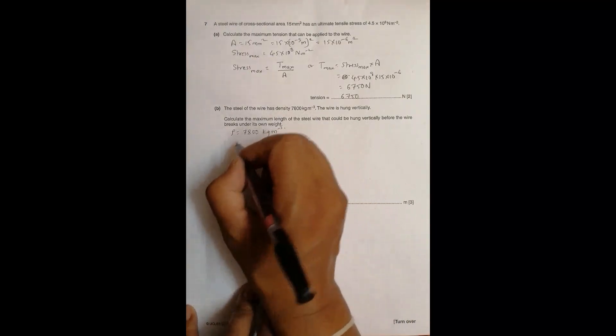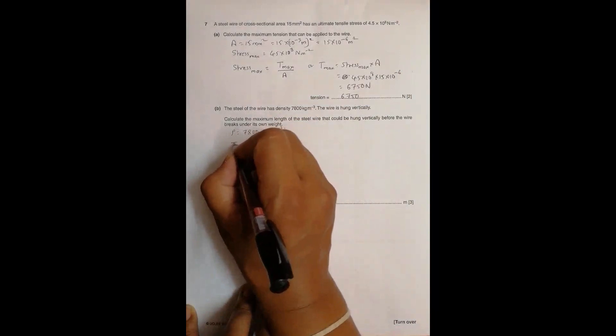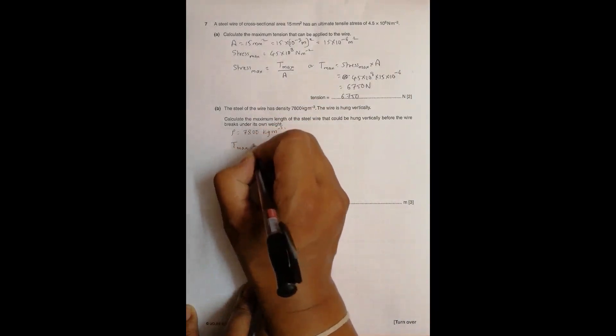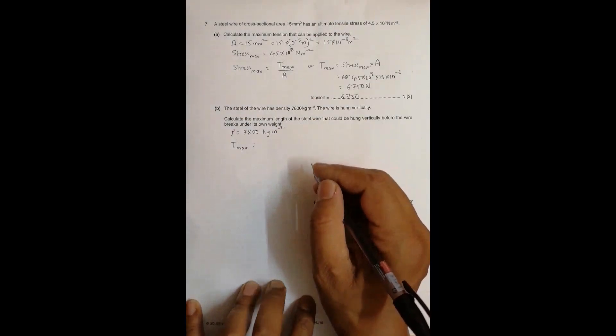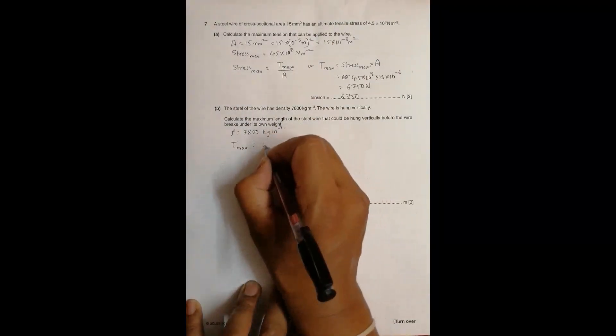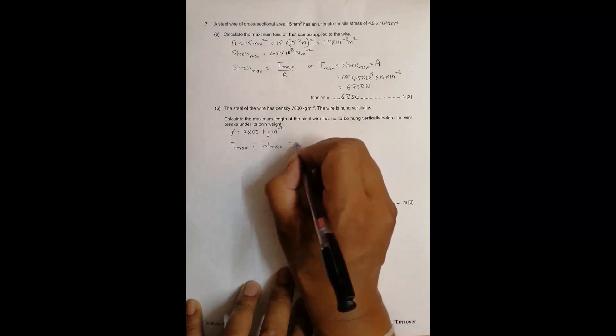So this is the T max. The T max, the force max, is provided by the weight of the wire. That means T max is equal to the maximum weight of the wire it can handle, so that's equal to mass maximum times g.